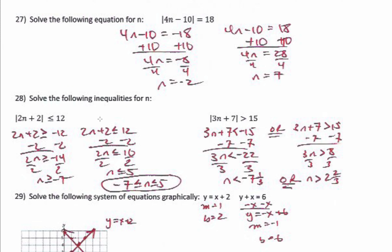For absolute value inequalities: when the absolute value is less than or equal to a number, the answer is a bounded interval. If the distance from the origin is less than or equal to 12, then n is greater than or equal to negative 12 — switching the sign when negating the inequality. Solving gives n is greater than or equal to negative 7 on one side, and n is less than or equal to 5 on the other, so the answer is negative 7 ≤ n ≤ 5.